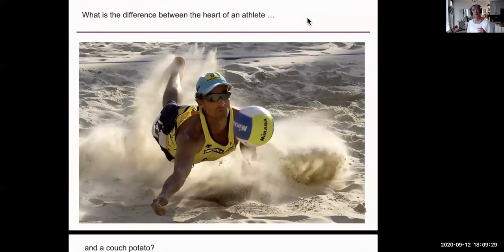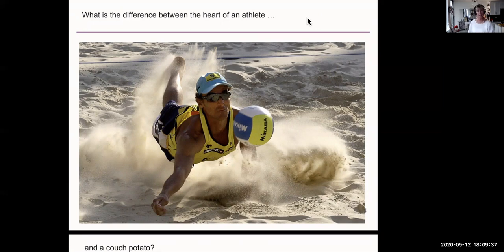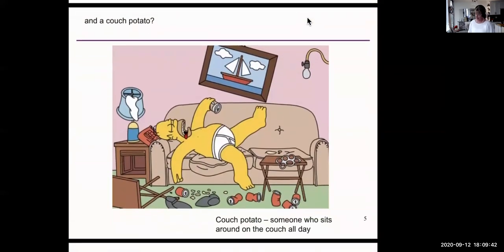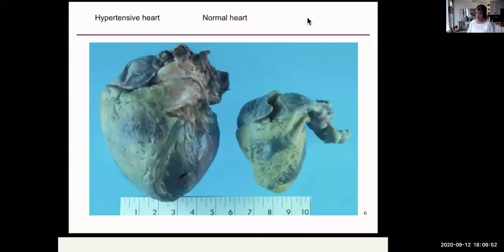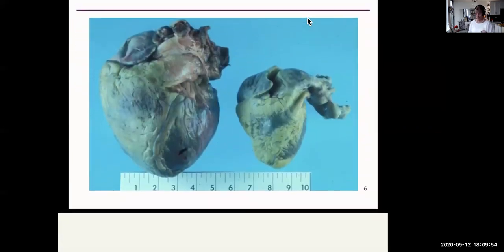When we're looking at the structures of the body, we can compare those of people of different types of lifestyles. For example, an athlete versus a non-athlete, or somebody who is a complete non-athlete couch potato, never does any exercise. What will their heart look like? This is an example of two hearts. One is very large and one is a normal heart.